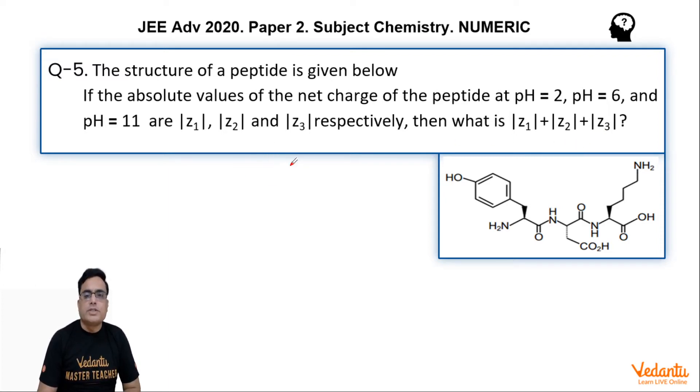If you hydrolyze this peptide from here, you will find that this one is tyrosine. If you hydrolyze it from here also, you will see that at the center it is aspartic acid and on the right side it is lysine. So it's a tripeptide which gives tyrosine, aspartic acid, and lysine.